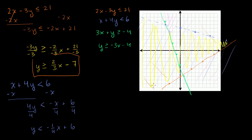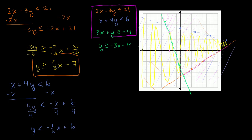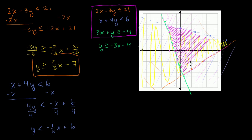If someone asks to graph all points satisfying this system of three inequalities, it's the overlap of all their solution sets: above the orange line, below the blue line (not including it), and above the green line. The solution set is this area right over here, including the orange and green boundaries but not the blue dotted line.